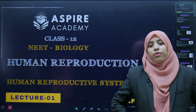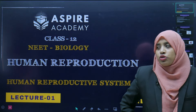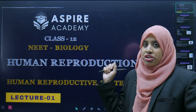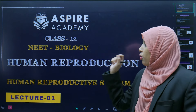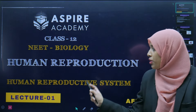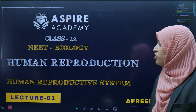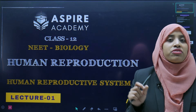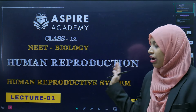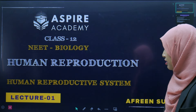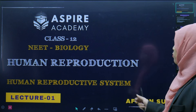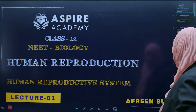Hello everyone, welcome to Aspire Academy. Today we are going to discuss the chapter on human reproduction. This is a Class 12th topic. The subpart we will cover is the human reproductive system, which covers both the male and the female reproductive system. Let's see what reproduction is and how it takes place in human beings.